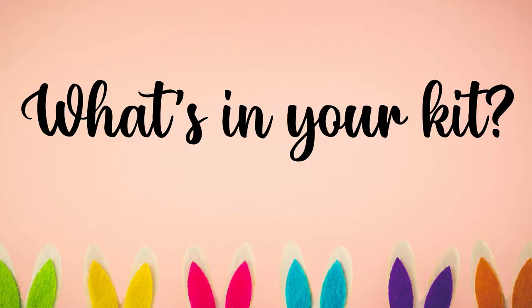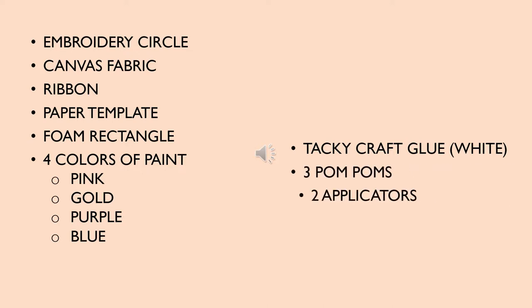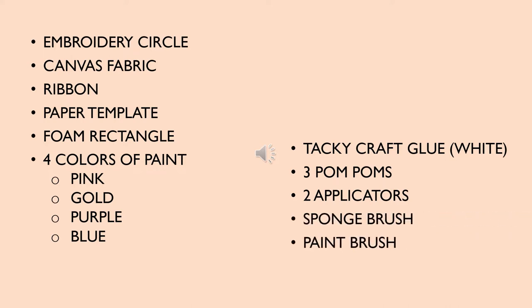Let's see what's in your kit. In your kit you're going to have an embroidery circle, a piece of canvas, some ribbon, a paper template, a piece of foam, four colors of paint: pink, gold, purple, and blue. The white is tacky craft glue. Three little pom-poms. You'll also have two applicators, a sponge brush, a regular paintbrush, and a marker.